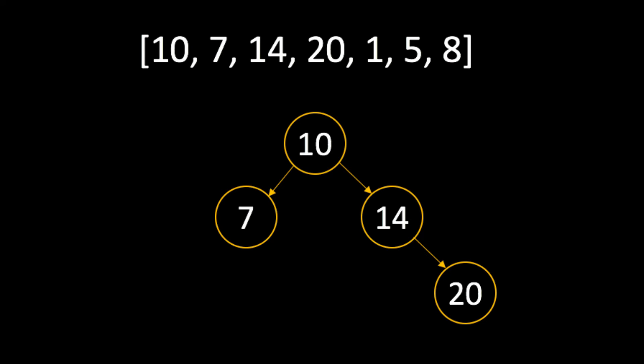So we move to the right to compare with 14. It's greater than 14, and 14 doesn't have any children to the right. So we make the 20 the right child node of 14.